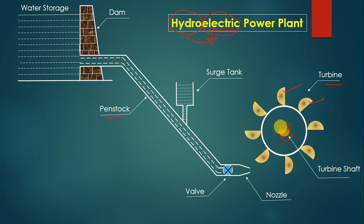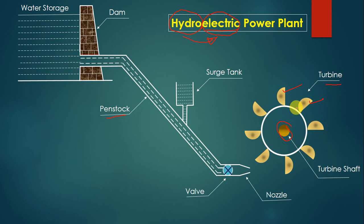We take mechanical energy output from the turbine shaft. This shaft is connected to an electrical generator. The function of the electrical generator is to convert mechanical energy into electrical energy. The electrical generator takes mechanical energy from the shaft and gives electrical energy as output. To avoid confusion, the electrical generator is not shown explicitly in the diagram.